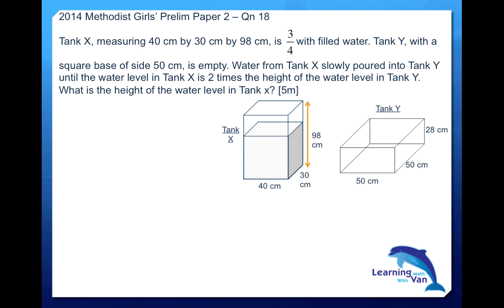So what is the volume of water that is already in Tank X? Applying the formula, we know that volume equals length times breadth times height. And because this is not filled to the brim, it's only three-quarters. So we take three-quarters times 40 times 30 times 98, and that gives us 88,200 centimeter cubed. This is the volume of water, bear in mind that.